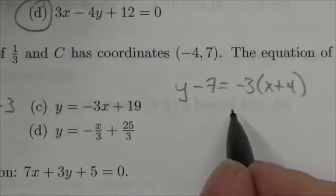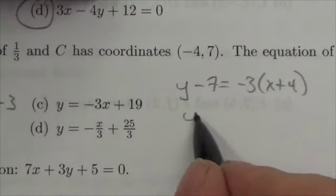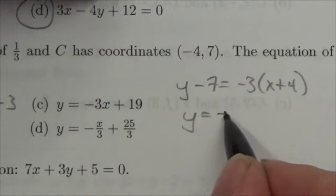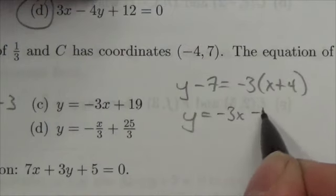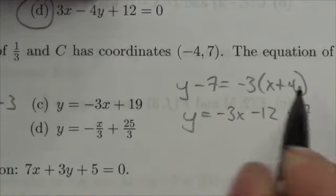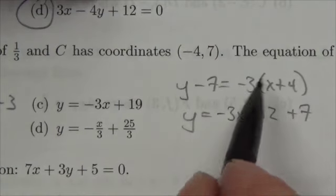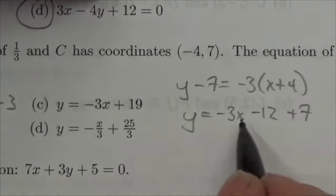Now I can manipulate it to get it into slope-intercept form. I'll bring the negative 7 over and multiply through. My negative 3 here, I'm gonna distribute that through and then combine